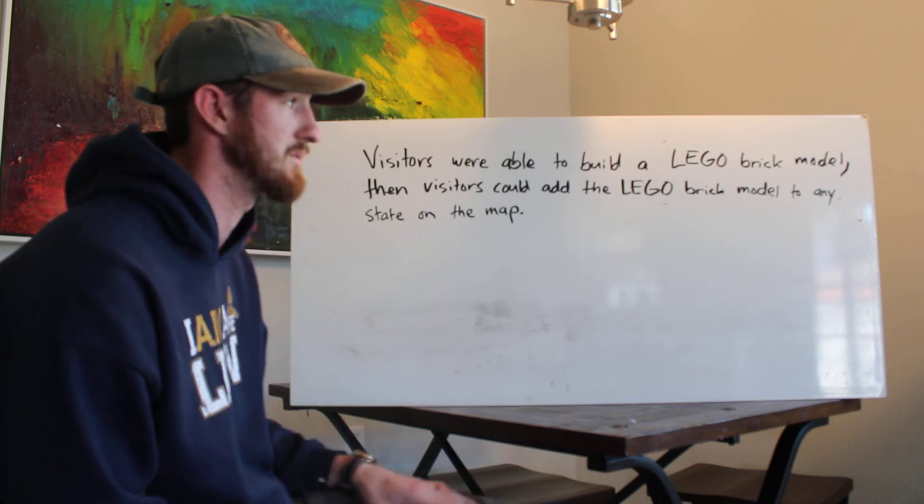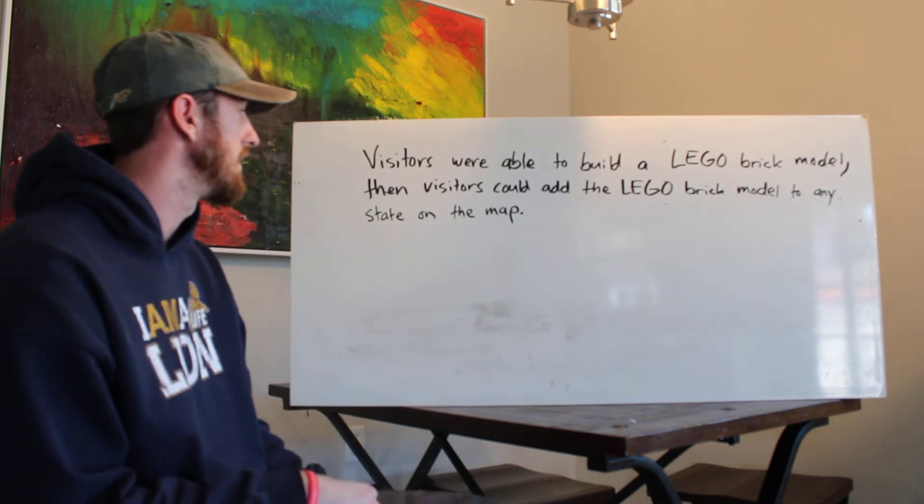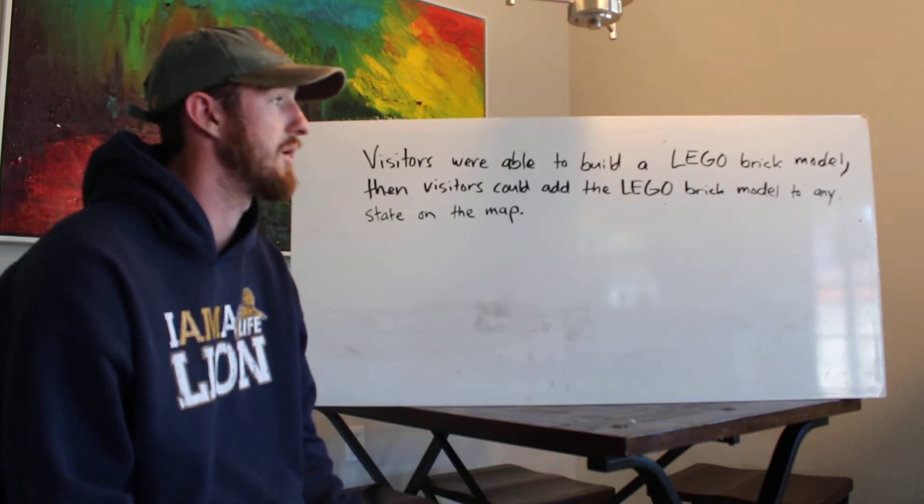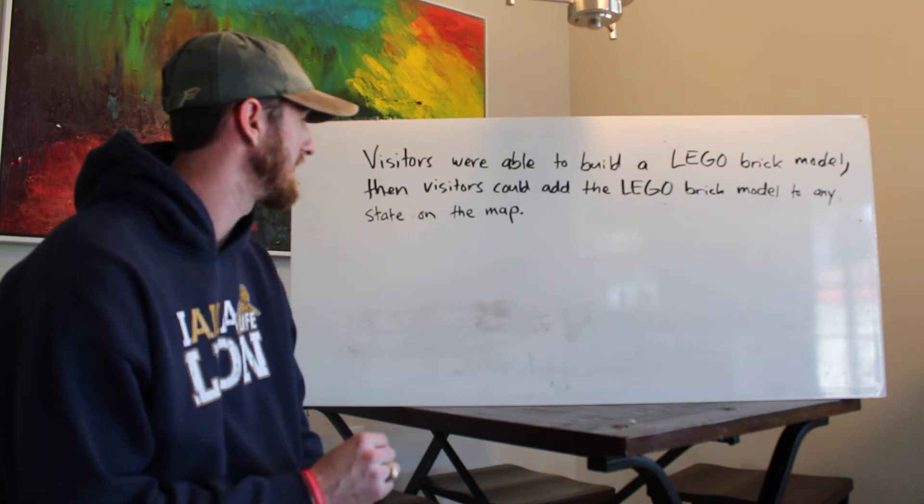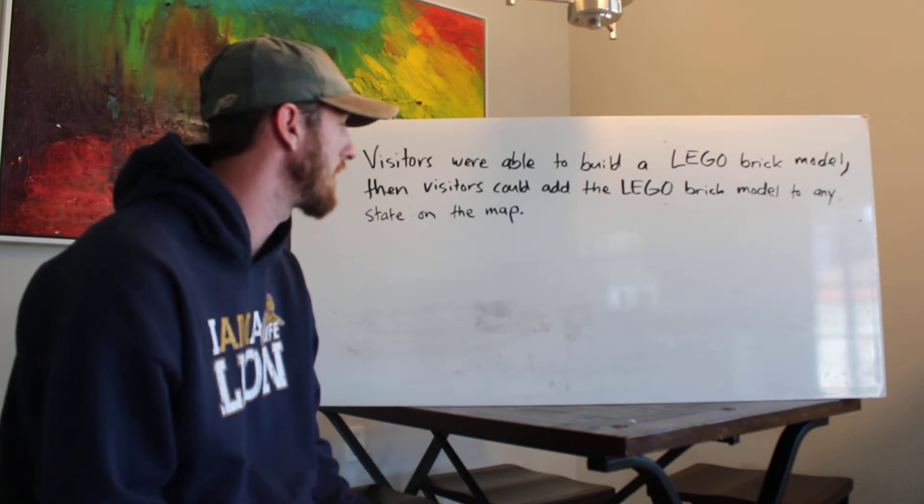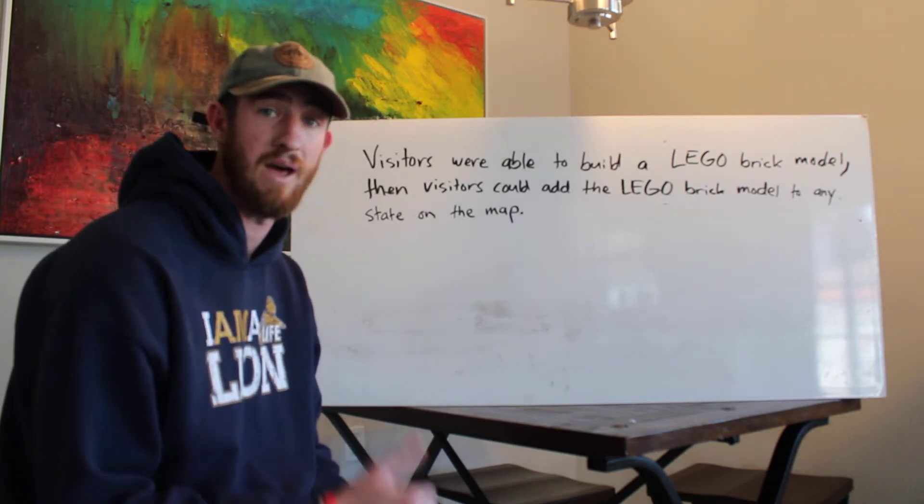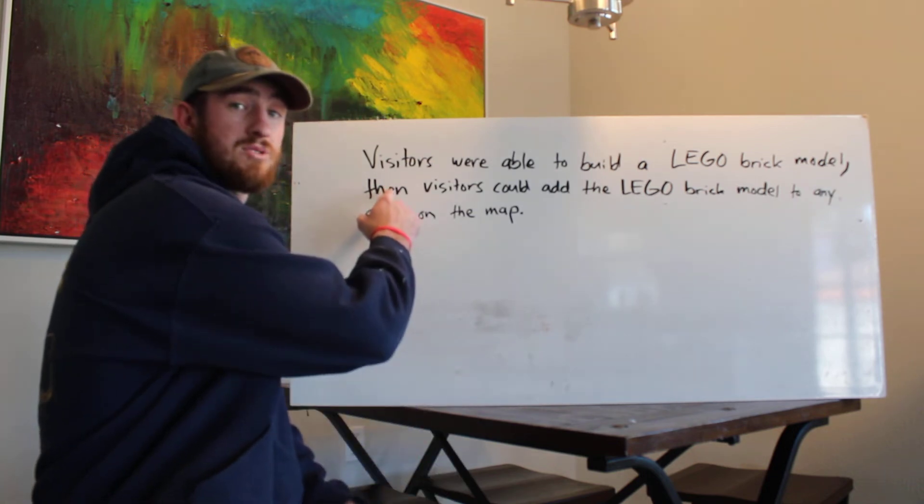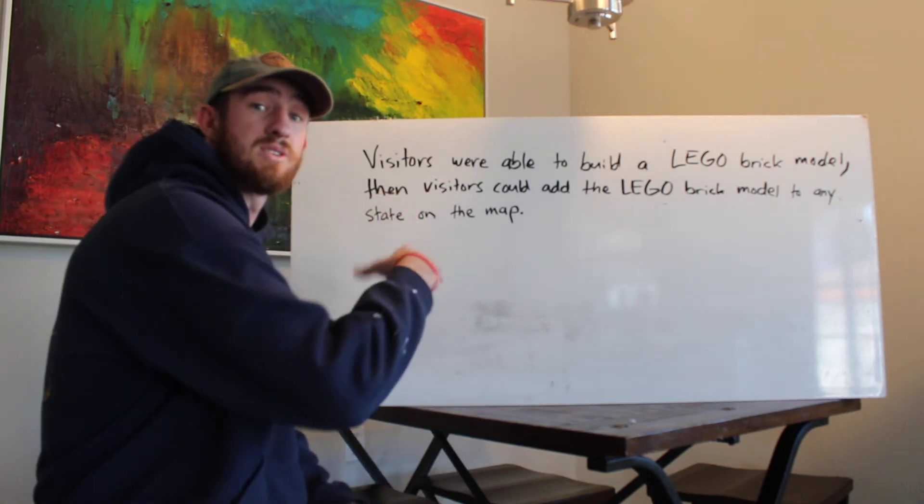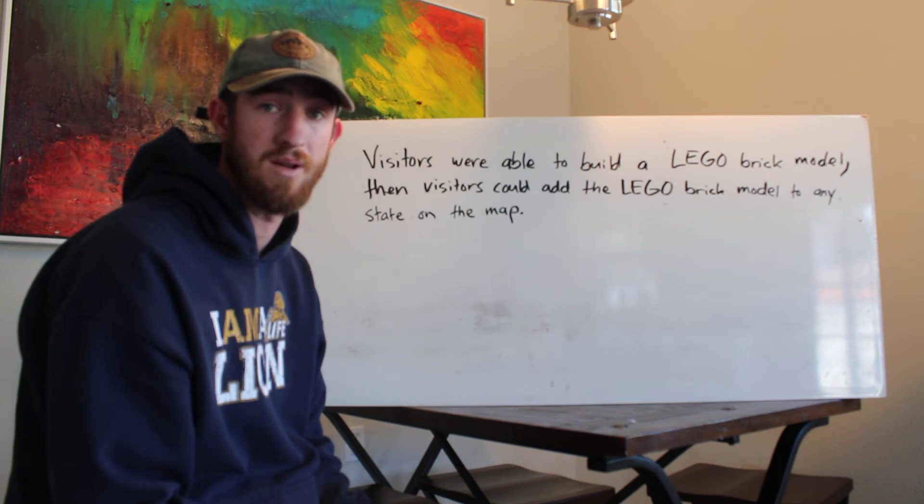So let's look at our sentence and pretend that that comma is a period. Visitors were able to build a Lego brick model, period. Then visitors can add the Lego brick model to any state on the map. That works. And then becomes a transitional phrase, which is the next thing that we would talk about when it comes to building sentences.